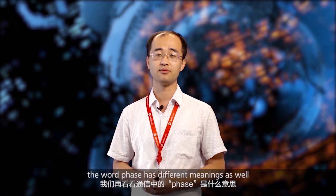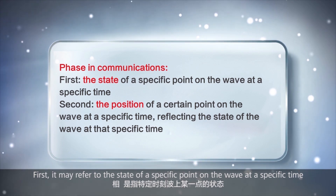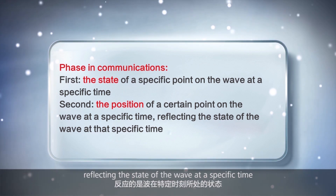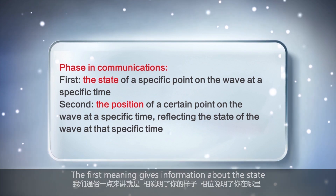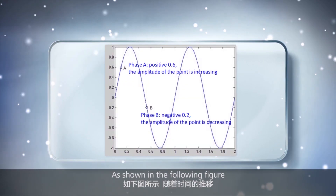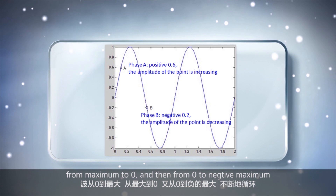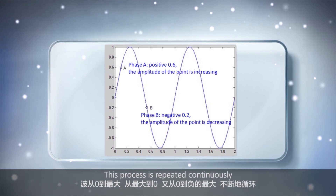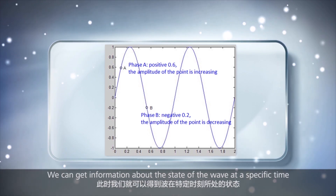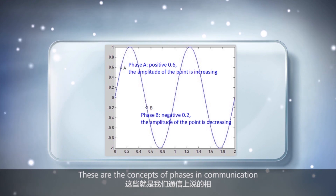In communications, the word phase has different meanings as well. First, it may refer to the state of a specific point on the wave at a specific time. Second, it may refer to the position of a certain point on the wave at a specific time, reflecting the state of the wave at that moment. The first meaning gives information about the state, while the second meaning gives information about the location. As shown in the following figure, as time passes, the amplitude of the wave goes from zero to maximum, from maximum to zero, and then from zero to negative maximum. This process is repeated continuously. We can get information about the state of the wave at a specific time, the increasing or decreasing amplitude of a certain point, and the current value. These are the concepts of phases in communication.